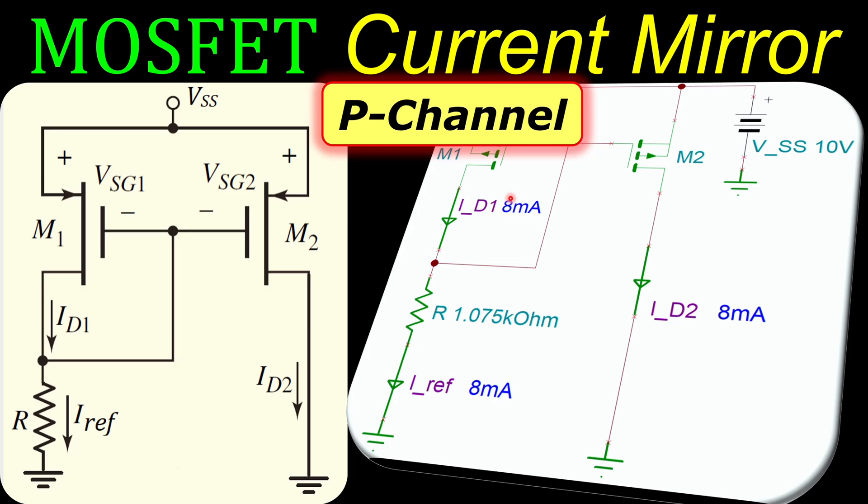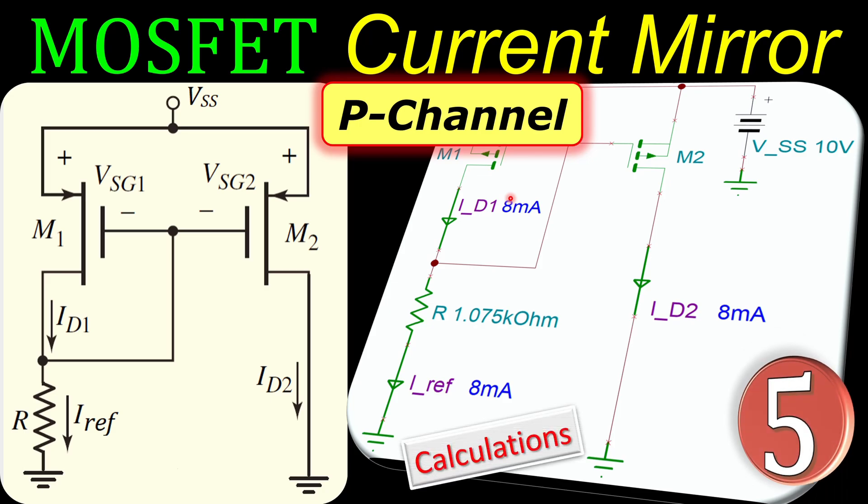Welcome back to a new video about current mirrors using MOSFETs. In this example we will use the P-channel MOSFET for the simple current mirror configuration. This is our example number five and we will work out the calculations step by step and verify these in SPICE simulations.